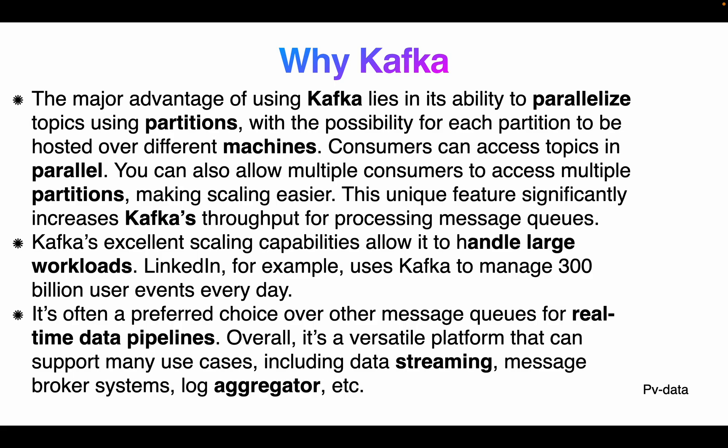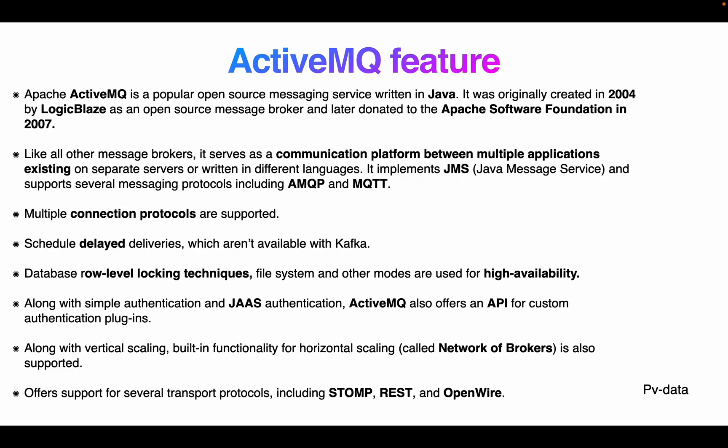Kafka's excellent scaling capability allows it to handle large workloads. LinkedIn, for example, uses Kafka to manage 300 billion user events every day. It's often the preferred choice over other messaging queues as a real-time data pipeline and a facility platform supporting many use cases including data streaming, message broker systems, and log aggregation.